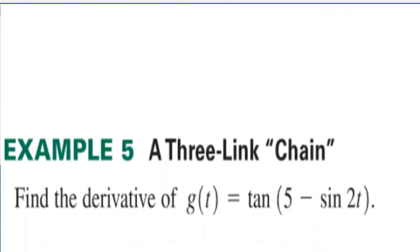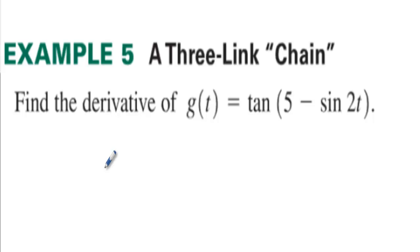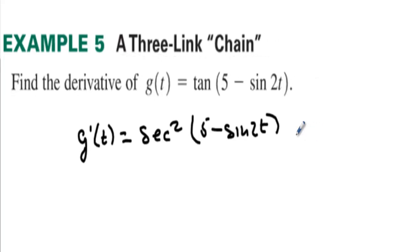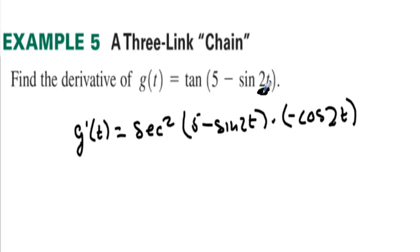How about a three-link chain? The outside function is tangent, so its derivative is secant squared. We leave the inside function alone, then take the derivative of the next layer: derivative of 5 is 0, derivative of negative sine is negative cosine of 2t. Then working all the way to the inside, the derivative of 2t is 2.